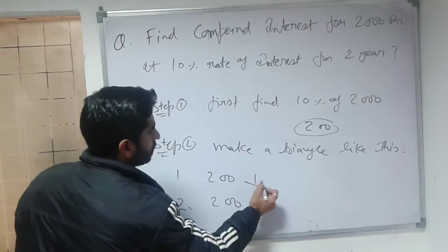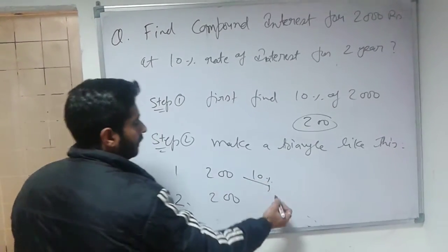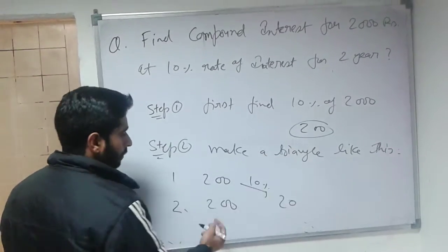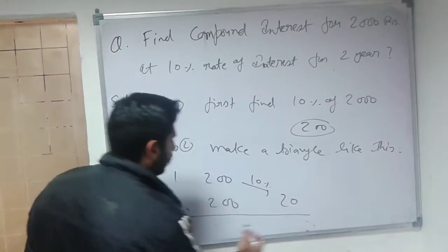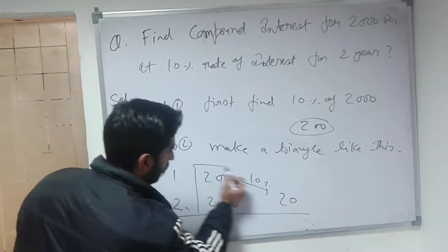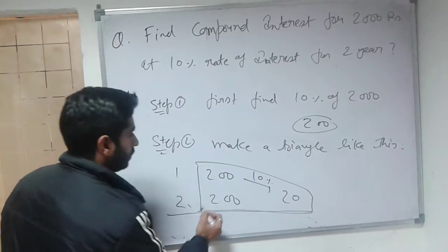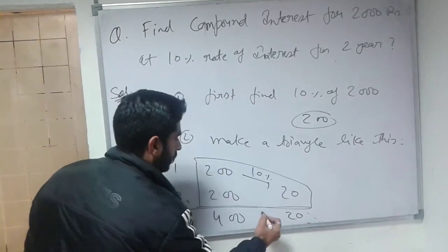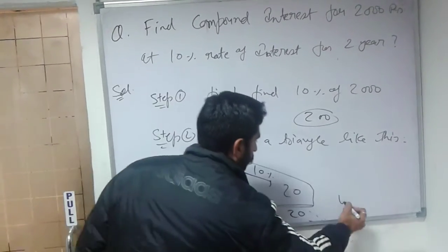Now 10% of this 200 is 20, as I told you before by the dot formula. Now make a grand total here. This is a triangle, now make a grand total: 400 and this is 20. The grand total is 420.